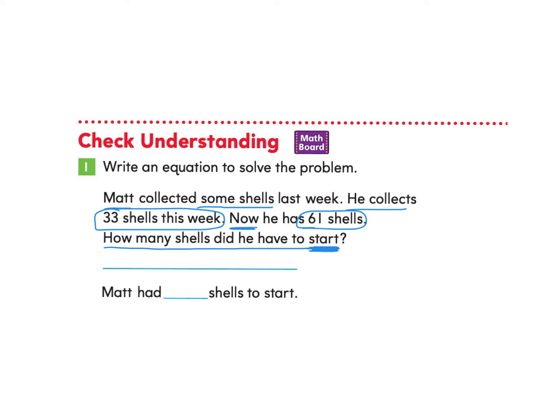You're welcome to pause the video and try this on your own and come back to check your answer or just follow along with me. So we know that he collected 33 shells this week and his total is 61 shells. So we're wondering how many shells he had to start. We know that there's a total of 61 shells collected. We know that Matt had 33 collected in one week, but we don't know what he started with. So this is our unknown that we're trying to find.